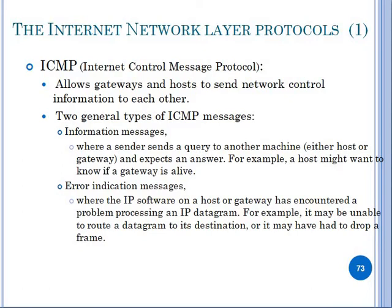There are two types of ICMP messages. One is the informational message and the other is the error indication message. An informational message is when the sender sends a query to another host and expects a reply. An error indication message is when ICMP confirms to the host that data is being discarded.